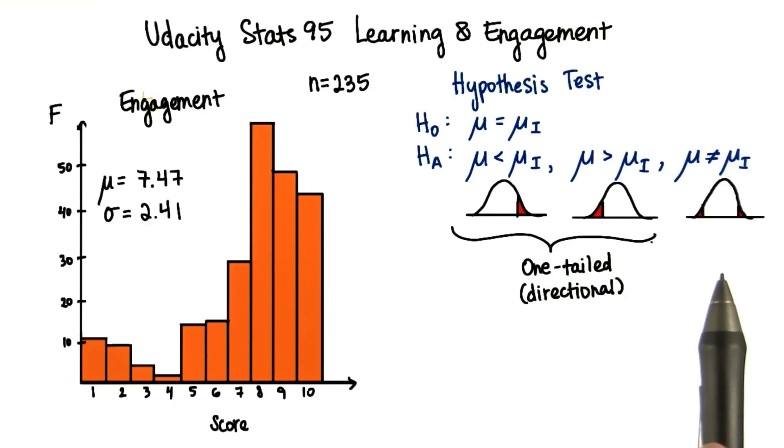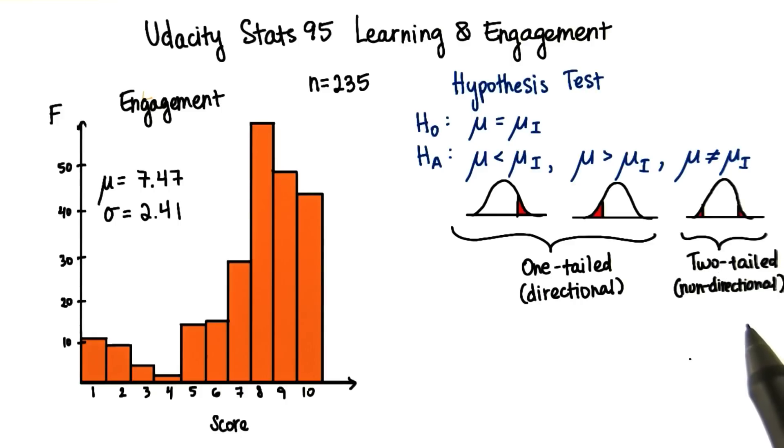Alternatively, we would choose a two-tailed or non-directional hypothesis test when we do not predict a direction of the treatment effect. In general, we use two-tailed tests because they are more conservative.